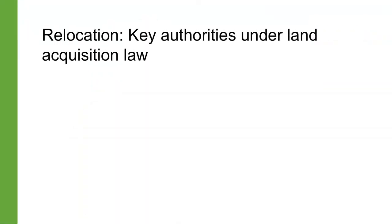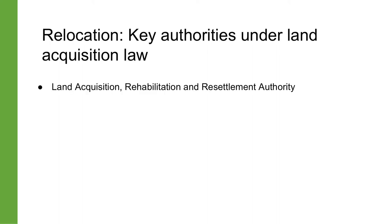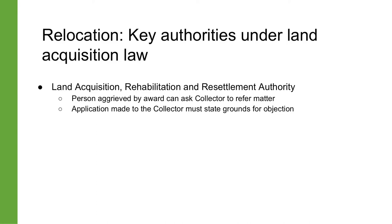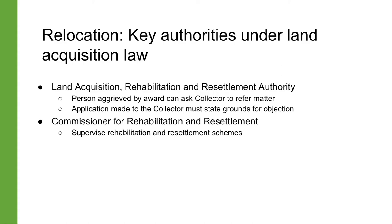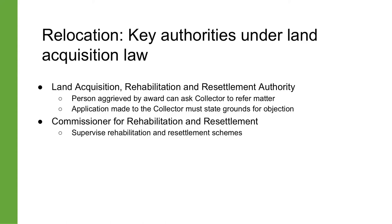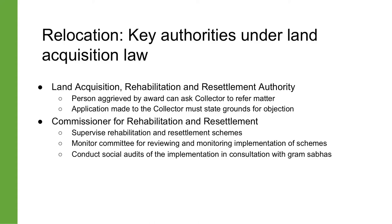Let us now look at some important offices involved in the processes of resettlement and rehabilitation. For the settlement of disputes in relation to acquisitions, both the state and central governments can appoint people qualified under the law to the position of Land Acquisition, Rehabilitation and Resettlement Authority. Any person who has not accepted the provisions of an award in relation to resettlement and rehabilitation can ask the collector to refer the matter to the authority. Every state government also has a Commissioner for Rehabilitation and Resettlement, responsible for supervising the formulation and proper implementation of rehabilitation and resettlement schemes, and a monitoring committee for reviewing and monitoring their implementation. The commissioner is also responsible for conducting social audits of the implementation of resettlement schemes in consultation with Gram Sabhas.